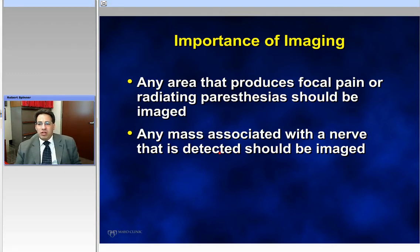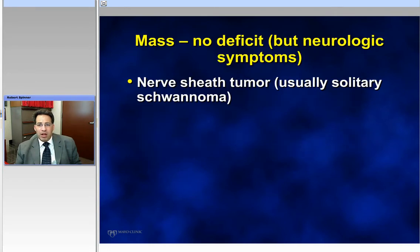Any mass associated with a nerve that is detected on your clinical exam should be imaged. Assuming everything is a lipoma, lymph node, or ganglion cyst when they're in unusual spots is a shortcoming. I would get an MRI or even an ultrasound.